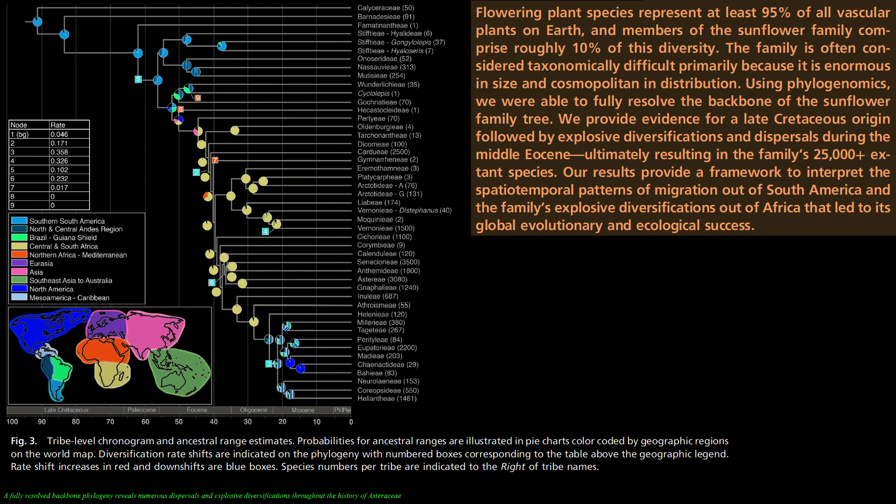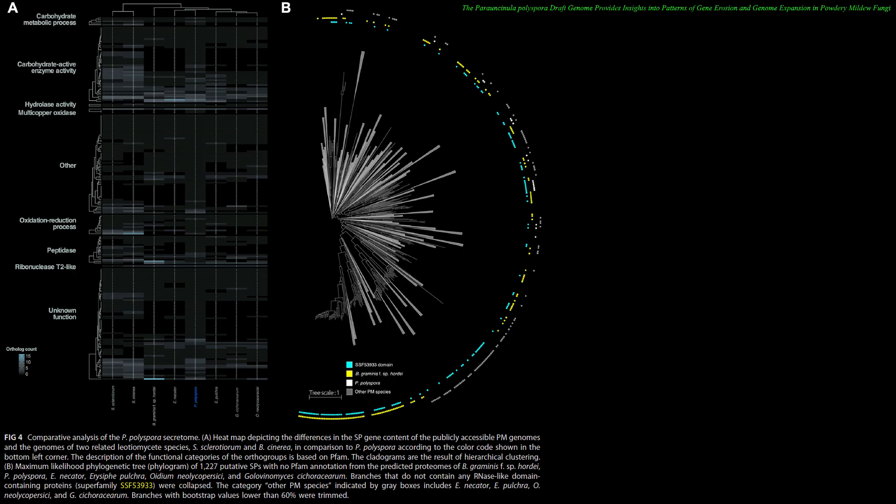This coincided with the Middle Eocene climatic optimum when the Earth warmed after a period of cooling. Powdery mildews likely did not develop in the South American continent, but a lack of phylogenetic information makes it hard to speculate.